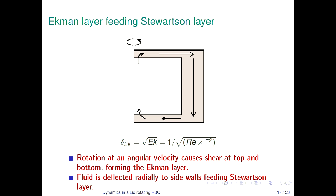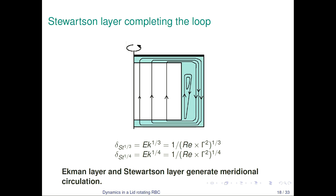The Ekman layer has thickness of order of the square root of the Ekman number. The fluid is deflected radially from the top plate to the sidewalls. The Ekman layer feeds into a vertical layer called the Stewartson layer, which is a sandwich structure between two characteristic thicknesses. The fluid twisted from the top plate is deflected along the sidewalls downward in the Ekman layer, deflected from the bottom, and moves towards the central core, forming a complete circulation loop.